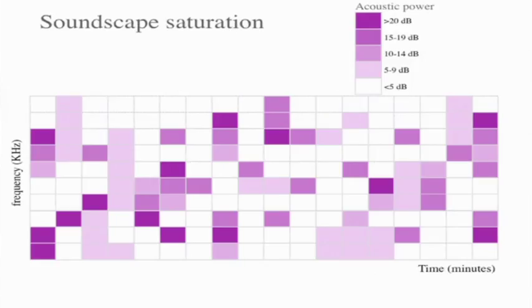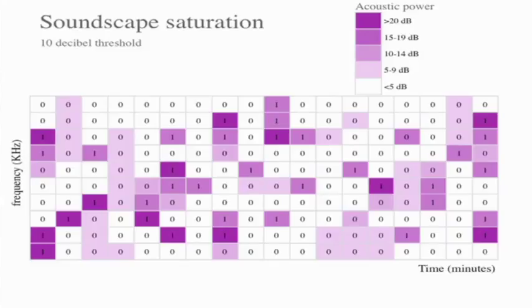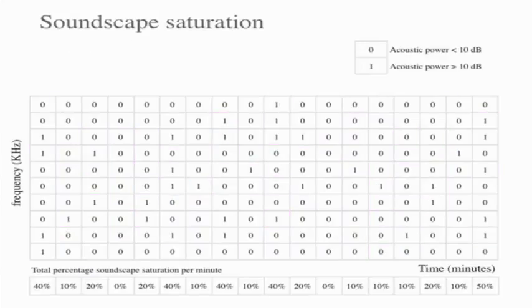The next step was to calculate some measure of how saturated the soundscapes are at any given point. In this cartoon, the darker the color, the more acoustic power there is in each block. We set a threshold — in this example, 10 decibels — and anything above that counts as a sound made by an animal rather than background noise. For each minute, we convert the data to just ones and zeros, and then look at what proportion of the frequency bins for that minute have some sound in them. So we get just a percentage of saturation for each minute.